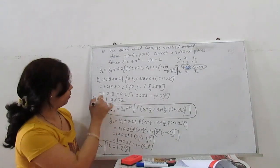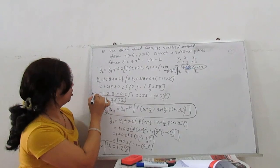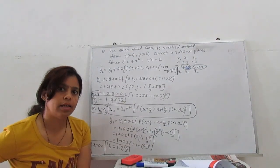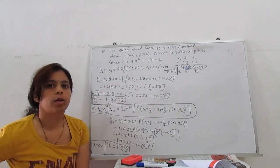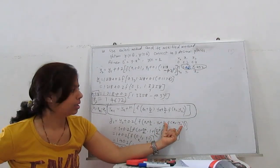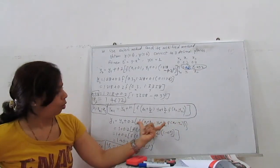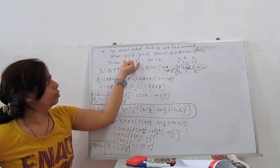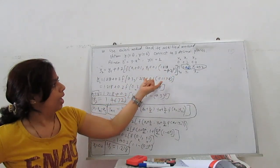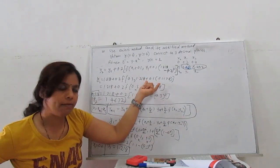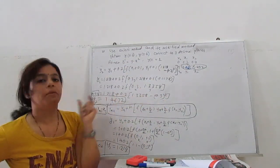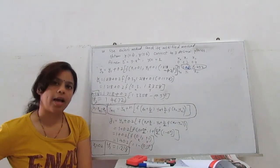So y2 = 1.218 + 0.2·(1.2458), giving y2 = 1.4672. At x = 0.4, y is 1.4672 by the Euler modified method. This is the Euler modified method — it is one step further than basic Euler. We calculate the function twice: first to get an intermediate y value using the inner function, then use that to evaluate the function again to get the final value.